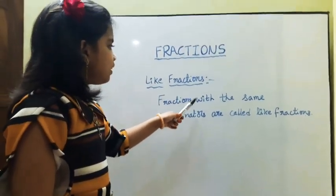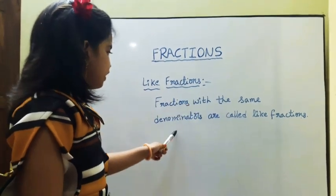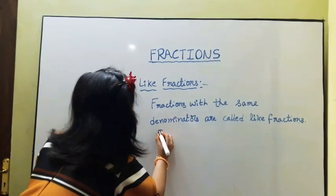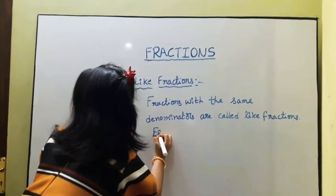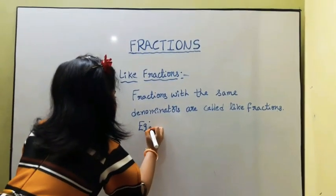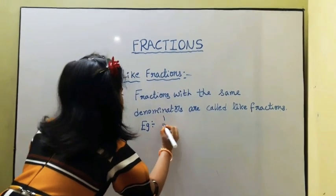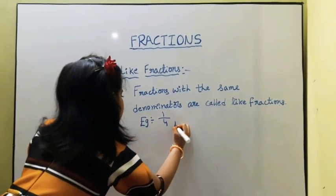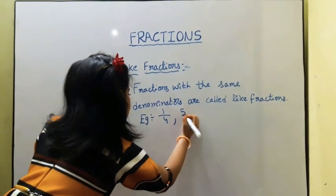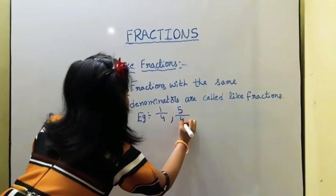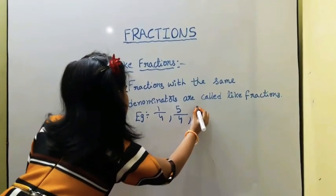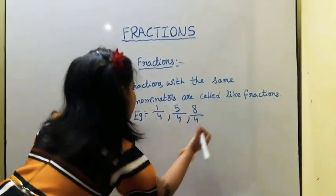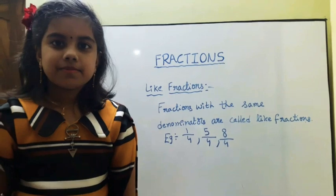Next, like fractions. Fractions with the same denominators are called like fractions. For example: 1 upon 4, 5 upon 4, 8 upon 4, etc.